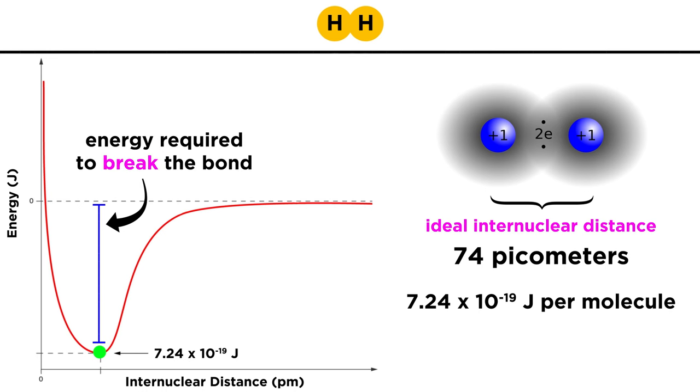This is also the energy that is required to break the bond, and it will be equal to 7.24 times 10 to the negative 19 joules for one hydrogen molecule. That's a very tiny energy, but multiplying by Avogadro's number gives us the energy required to break the covalent bonds in a mole of hydrogen molecules, and that will be 4.36 times 10 to the 5 joules, which becomes quite significant.